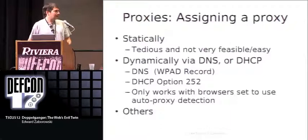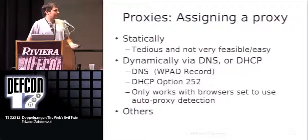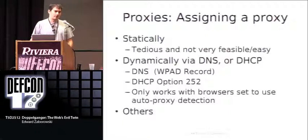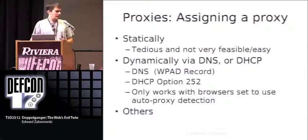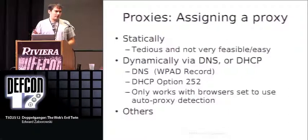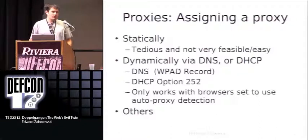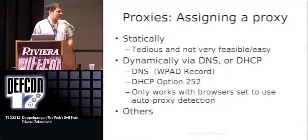How would you go about assigning a proxy? Statically in a pen test isn't the best way. You can do it dynamically via DNS or DHCP. DNS has a functionality called a WPAD record — any browser set up to use autoproxy detection will look for a domain name with a WPAD host prepended to it. If it finds it, it looks for a file on a web host at that URL containing the proxy configuration. The same applies to DHCP option 252, with more flexibility over the URL. And of course there's also ARP spoofing.